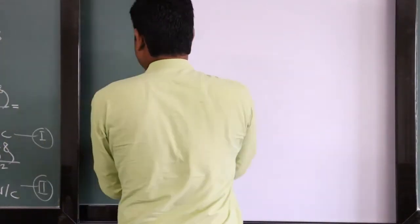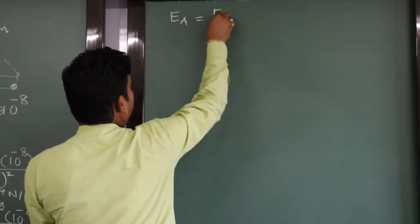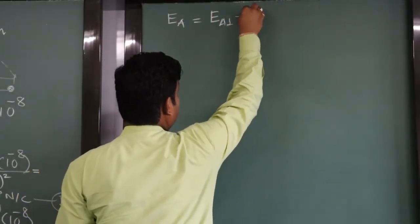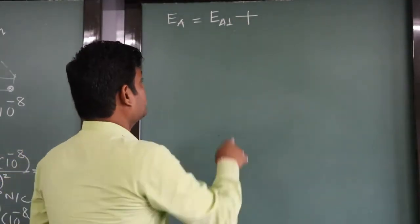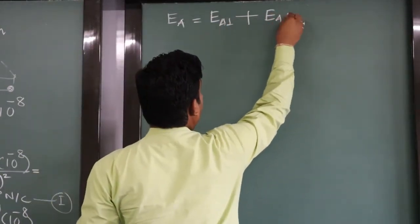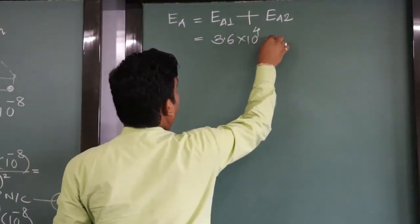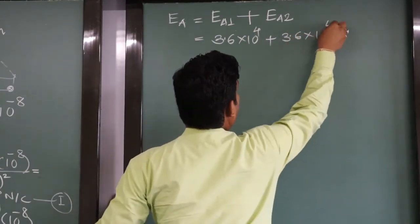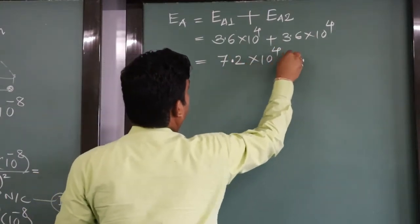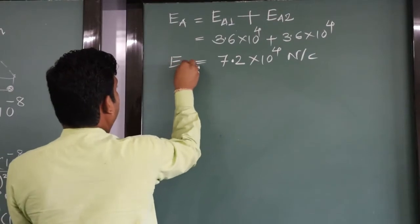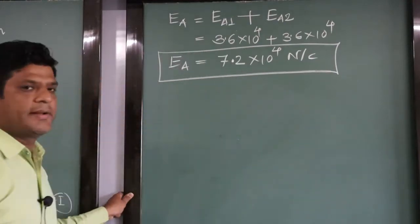Electric field at point A equals electric field at A due to first charge plus electric field at A due to second charge, because they are in the same direction. So the net electric field at point A is 3.6×10⁴ plus 3.6×10⁴ equals 7.2×10⁴ Newton per coulomb. This completes the first question.